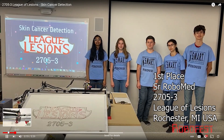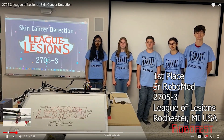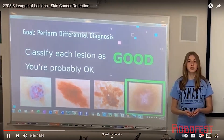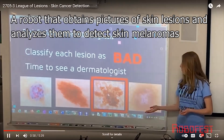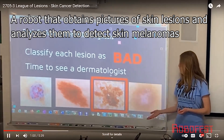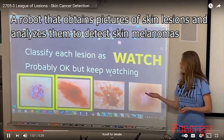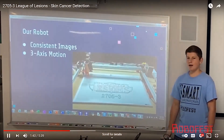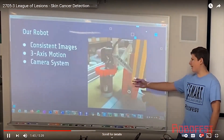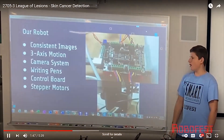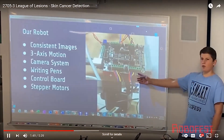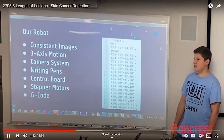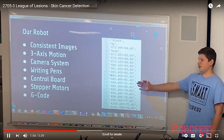We are the League of Lesions and we've chosen to use computer vision and robotics for early identification of skin cancers and other skin abnormalities. Our goal is to determine if the lesion is good and you're probably okay, if it's bad and you have to see the rheumatologist, or if it's okay but you could just keep a watch on it. Our robot is a three-axis motion system with a camera and writing pens. It also has a board that controls four different separate orders. We then sent a sheet code over USB to tell the robot where and how fast to move.